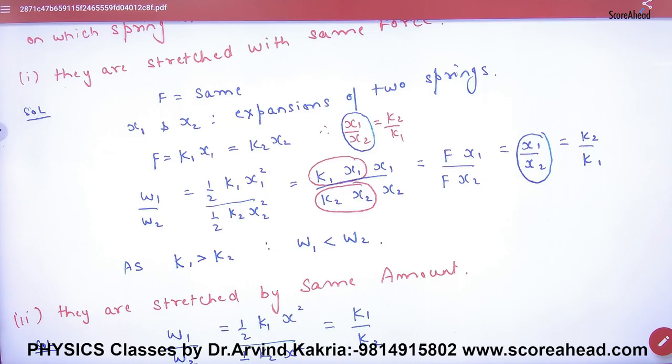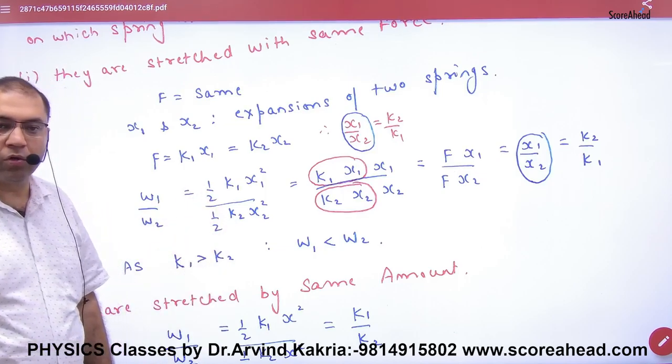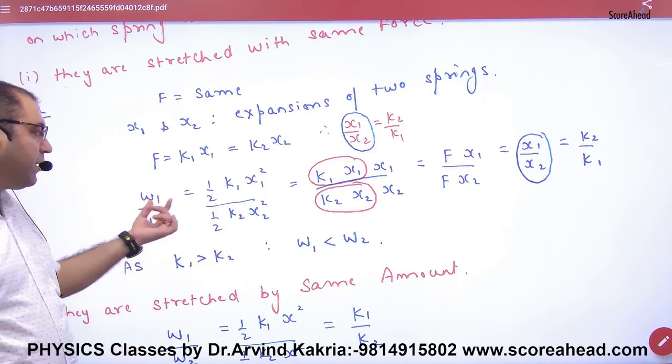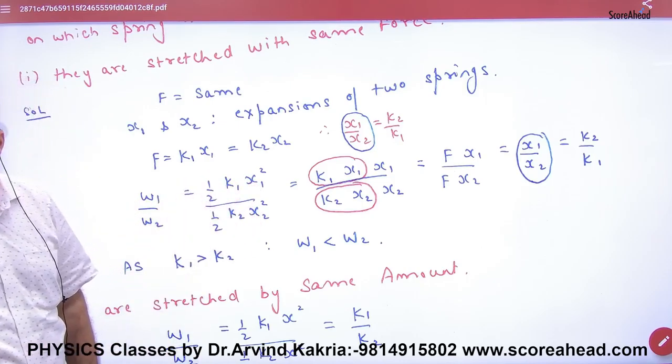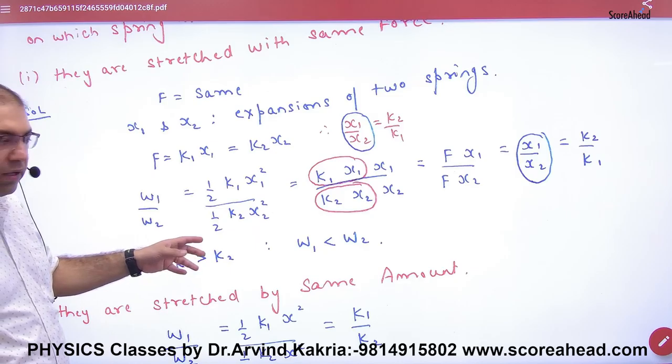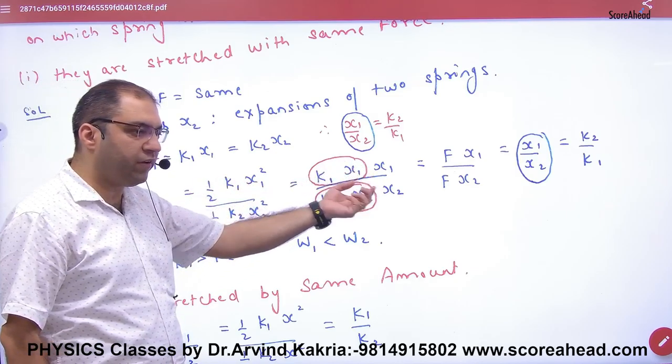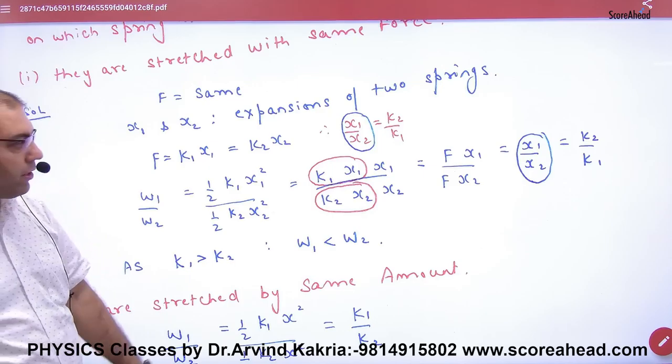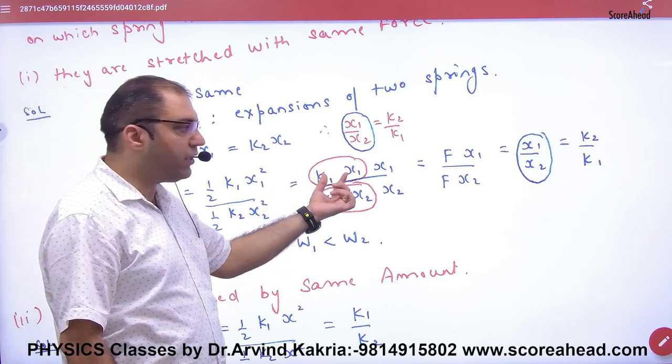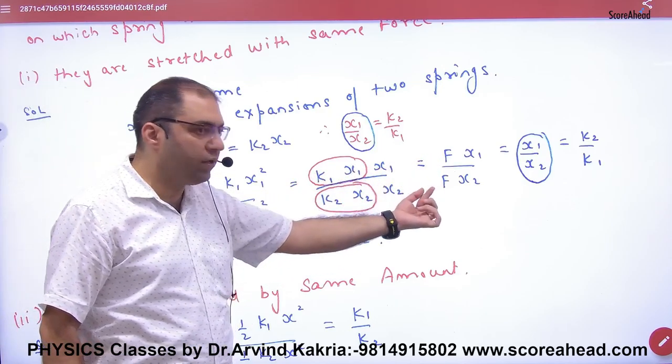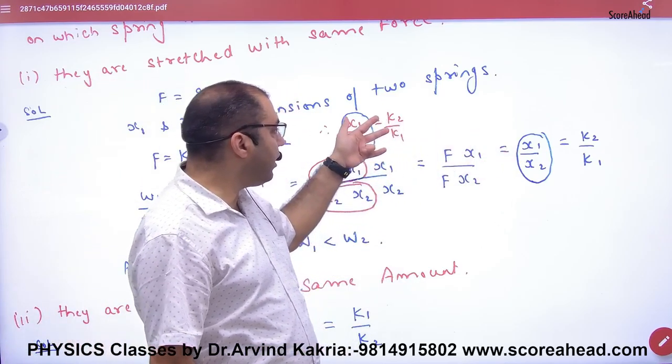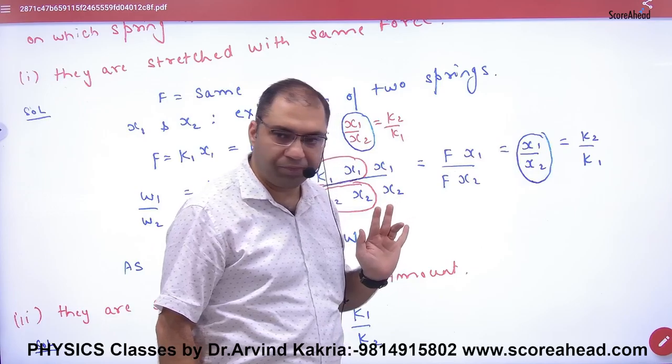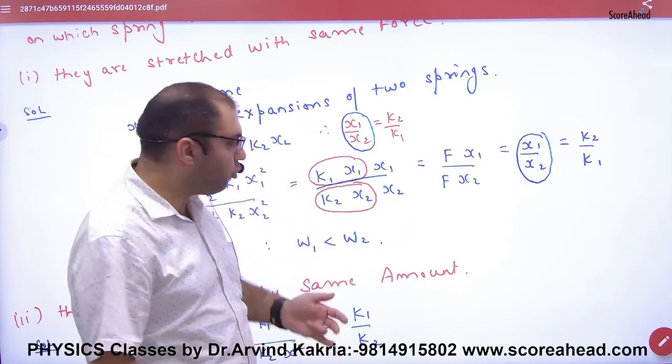Work done has the formula half KX squared. So work done in the first spring is half K1X1 squared, and in the second spring half K2X2 squared. Cancel the halves. X1 squared is X1 times X1, X2 squared is X2 times X2. Now, we discussed K1X1 equals F, which equals K2X2. Cancel and find the ratio is K2 by K1. So the ratio of work done is K2 by K1.